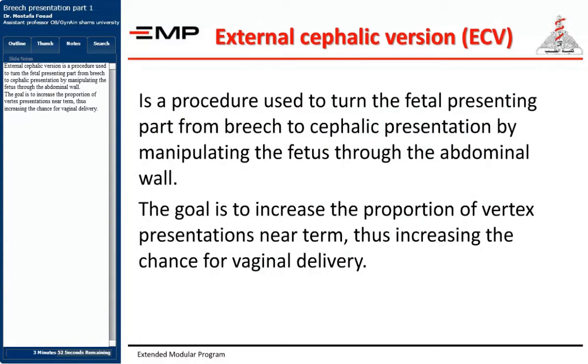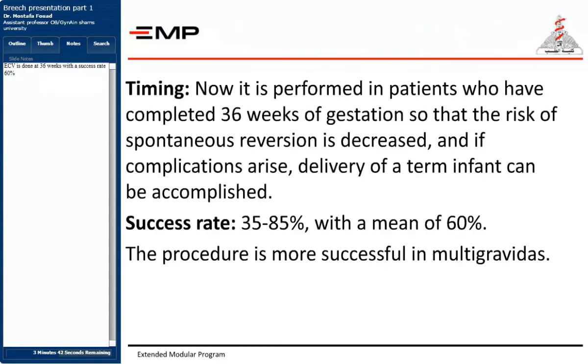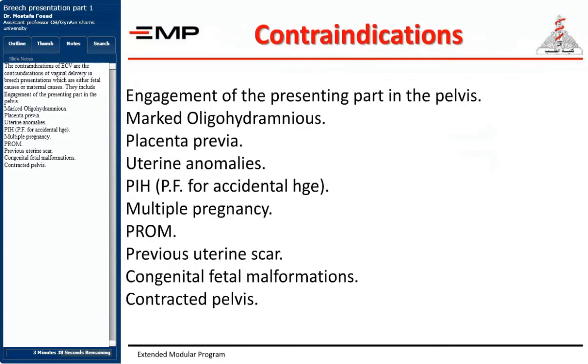ECV is done at 36 weeks with a success rate of 60%. The contraindications of ECV include: engagement of the presenting part in the pelvis, marked oligohydramnios, placenta previa, uterine anomalies, PIH, antepartum hemorrhage, multiple pregnancy, PROM, previous uterine scar, congenital fetal malformations, and contracted pelvis.